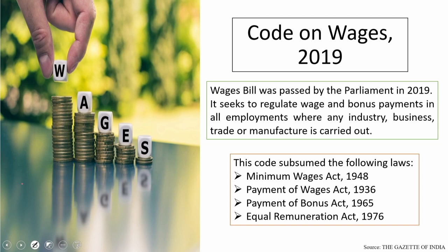Even after all these years of independence, approximately 90% of the workers work in the unorganised sector that do not have access to all the social securities. The total number of workers comprising of organised and unorganised sector is more than 50 crores. When you look into the Wages Bill specifically, we see that the code subsumed the following laws.